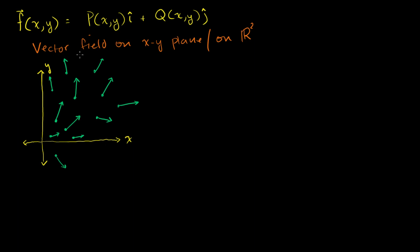It defines what a potential force — or some type of force — would be at any point. This is called a vector field, so it makes sense that it can describe any type of field: a gravitational field, an electric field, a magnetic field. This could be telling you how much force there would be on some particle in that field.